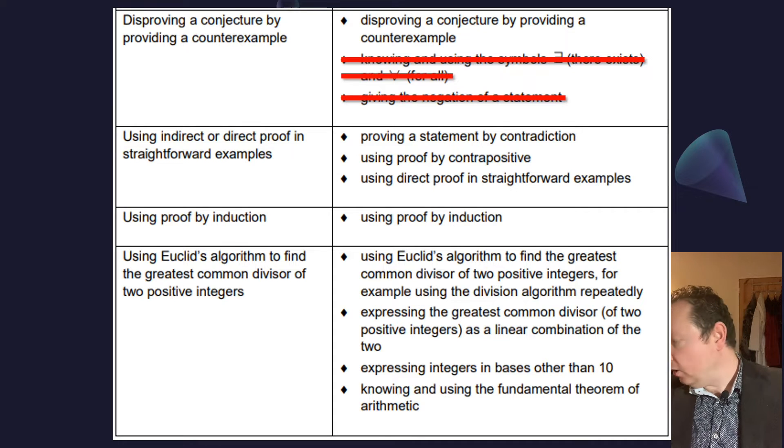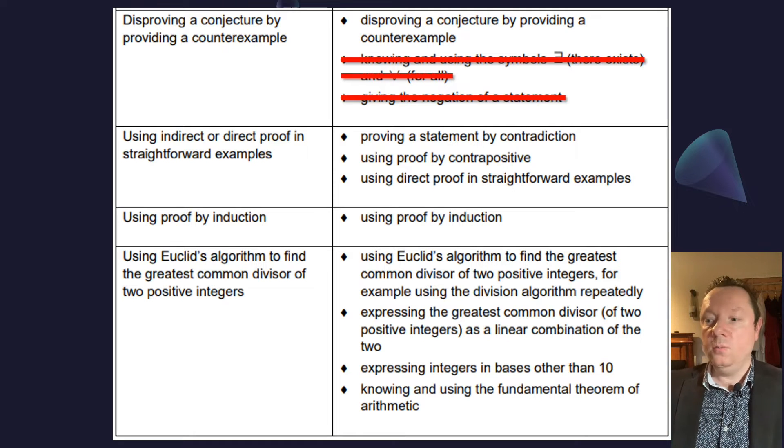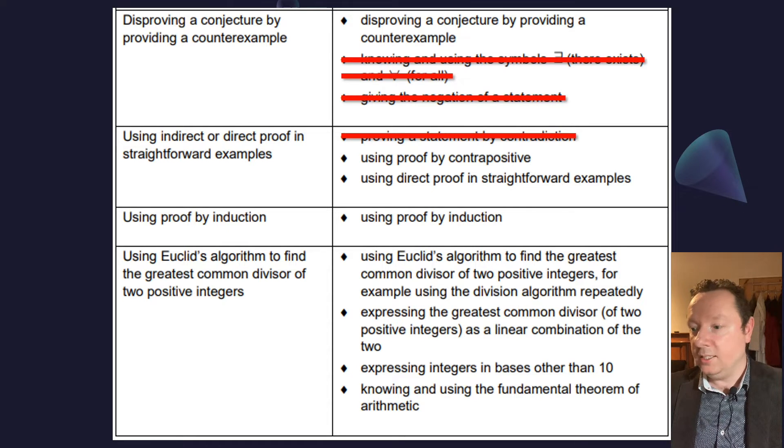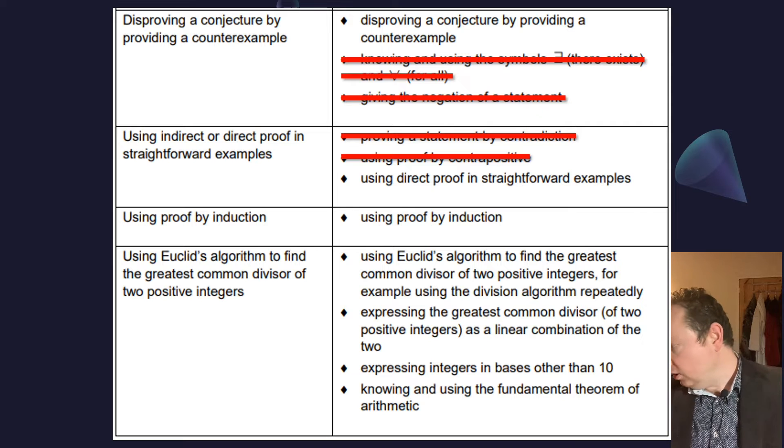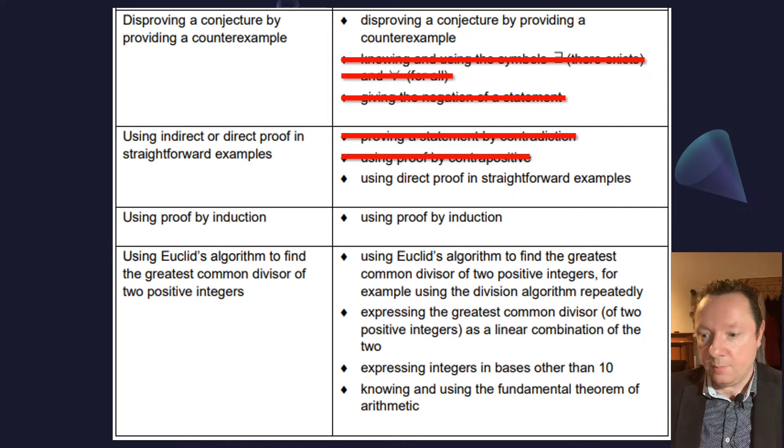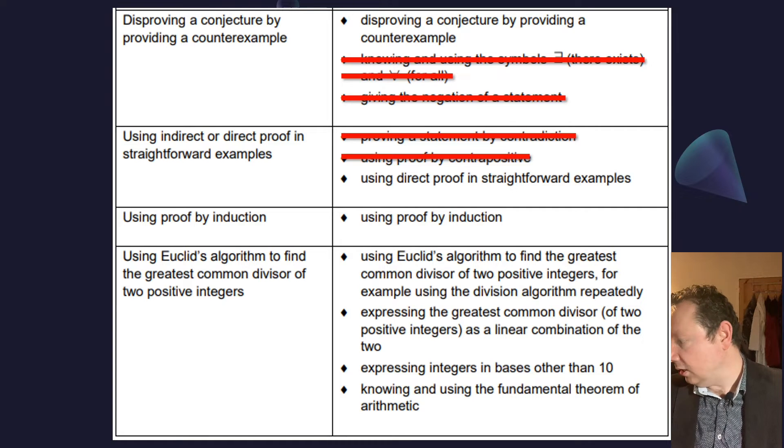Looking to our next point, using indirect and direct proof in straightforward examples. You will not have to prove a statement by contradiction, that is out. You will not have to use proof by contrapositive proofs. However, the third point is still in, using direct proof in straightforward examples. Proof by induction is still fine.